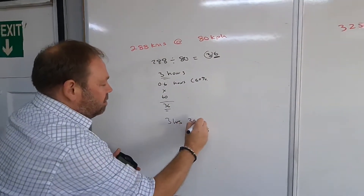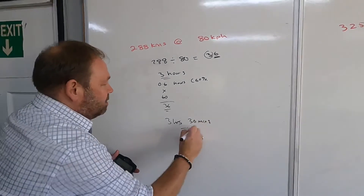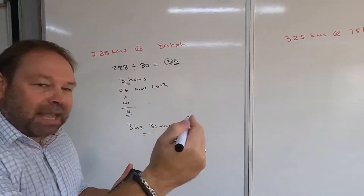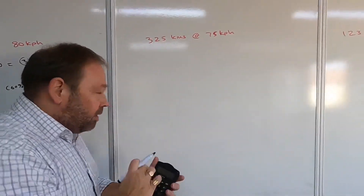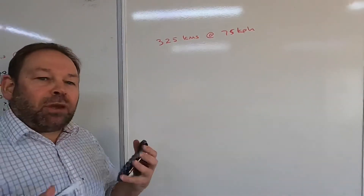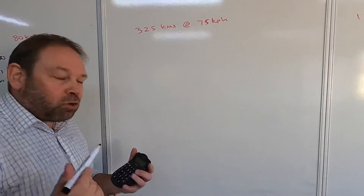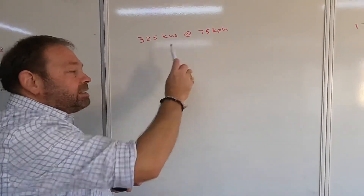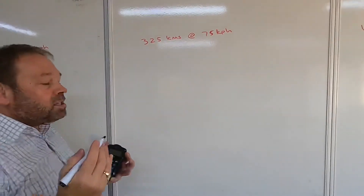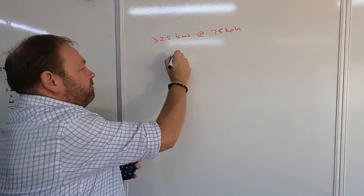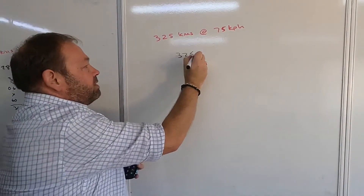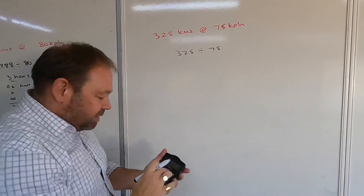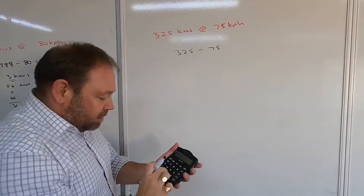So we now know that 288 divided by 80 kilometers per hour is 3 hours and 36 minutes. That's quite an easy one to work out. Moving on to the next example — this one is slightly irregular but there is logic behind it. We've got 325 kilometers at 75 kilometers per hour, and we're going to do exactly the same as before.